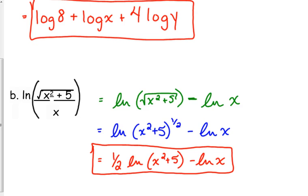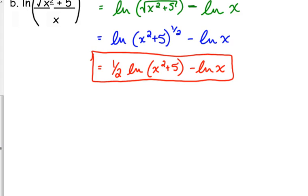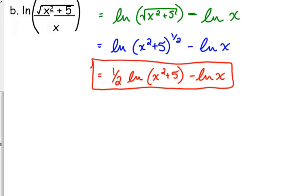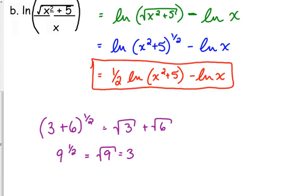Because that's x squared plus 5, we cannot apply the 1 half to the x squared and to the 5. But what we can do is use our power rule to rewrite that as 1 half natural log of x squared plus 5. Make sure you put x squared plus 5 in parentheses so that it is clear that the plus 5 goes with the logarithm. Student asks about distributing. Because of the plus. Let's look at it in terms of numbers. What if we had 3 plus 6 to the 1 half? If we were doing what you're asking, then that would be the square root of 3 plus the square root of 6. But if we add 3 and 6 and raise that to the 1 half, the square root of 9 is 3. And 3 is not equal to the square root of 3 plus the square root of 6.